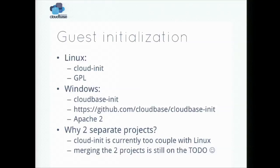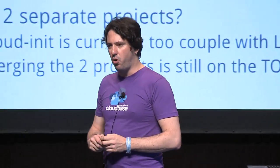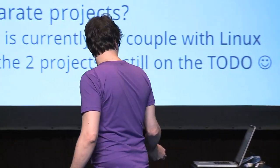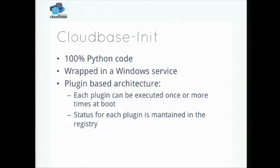The second reason for a separate project is that we wanted something Apache licensed, because as you probably know, cloud-init is GPL. We wanted a license giving more freedom to our customers when embedding this code in their projects. We still plan to merge it back. One important thing: since we wrote it in a completely decoupled way for the operating system, including Windows, with factories for the OS-specific classes, we also have in the works support for FreeBSD. So if you need FreeBSD workloads on OpenStack, let's talk about it.